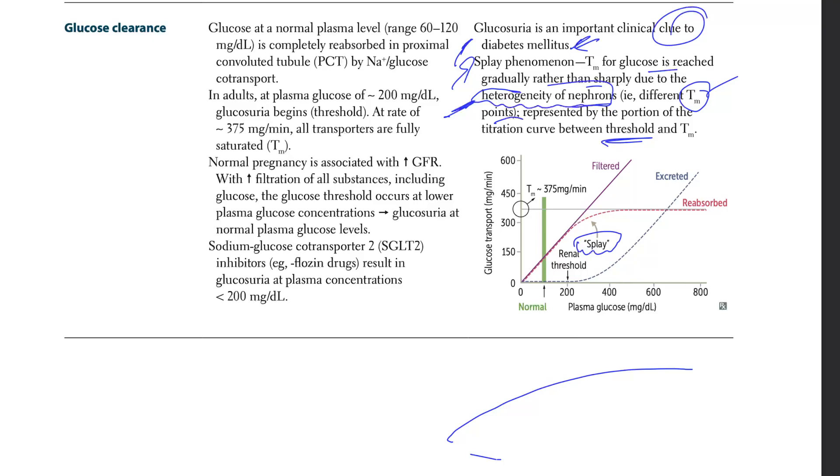So here's the normal glucose levels. The renal threshold is 200, right? And this threshold gives you right here. After this point, all of this is splay. And what is splay? Splay means that your saturation would be reached gradually. Look, gradually, instead of just reaching peak.